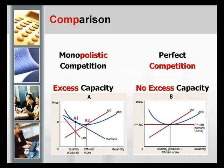For a monopolistic competition market structure, because of product variety and some remaining market power among firms, the demand curve is a downward-sloping curve. As we can see from Graph A, at point A1 the firm maximizes its profit, while at point A2 the firm produces at the lowest average cost — the firm's most efficient production. The gap between the output at A1 and A2 is what we call excess capacity.